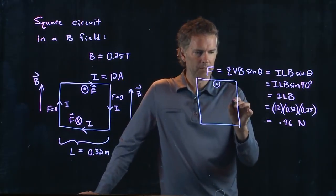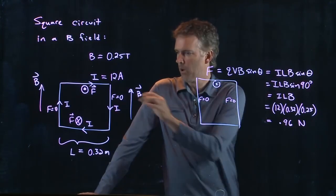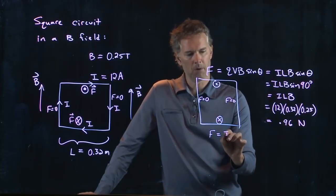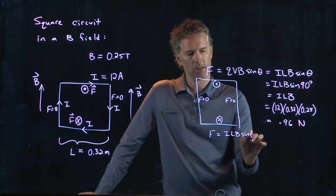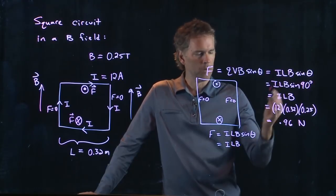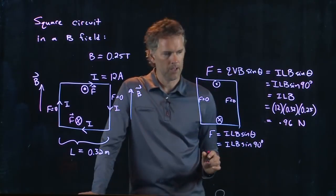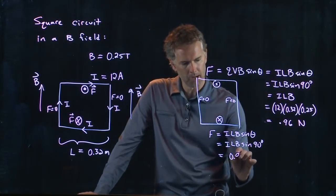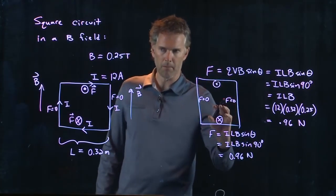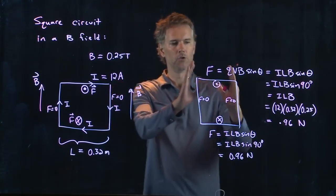The sides were zero, so we don't have to worry about those. The one on the bottom is into the screen. And that's going to have the exact same strength as the one on the top because it's a square wire with the same length. We have the same angle theta, which is 90 degrees. So we also get 0.96 newtons. Force on the top is exactly the same as the force on the bottom. It means it doesn't move anywhere, but it does rotate. It does twist.